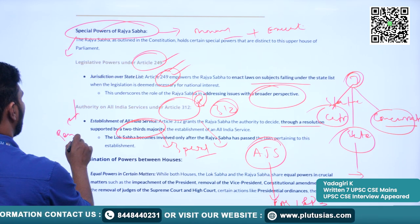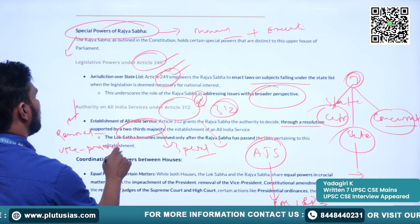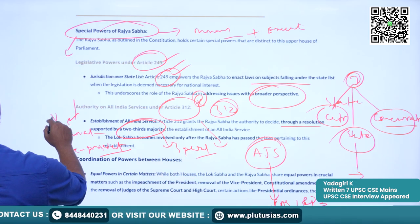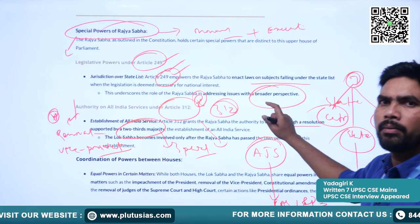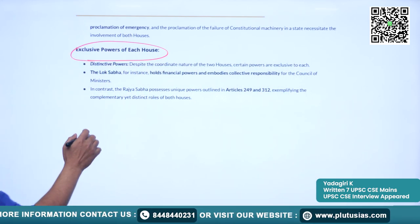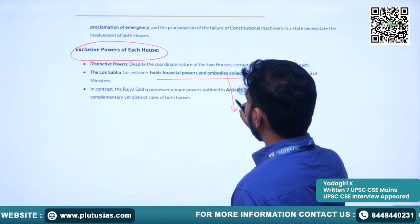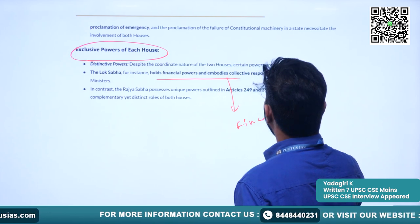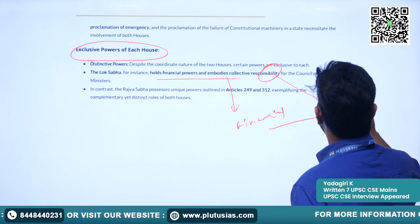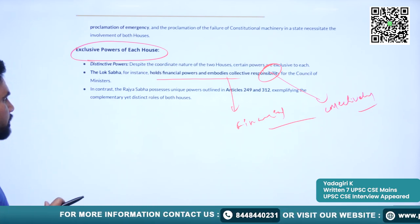Rajya Sabha has one more special power: when it comes to removal of the chairperson of Rajya Sabha or the Vice President, the proceedings and resolution shall be introduced only in the Rajya Sabha, not in the Lok Sabha. This is also one of the special powers of the Rajya Sabha. Similarly, the Lok Sabha has exclusive powers when it comes to financial powers or money bills and holding the Council of Ministers collectively responsible to the Lok Sabha.